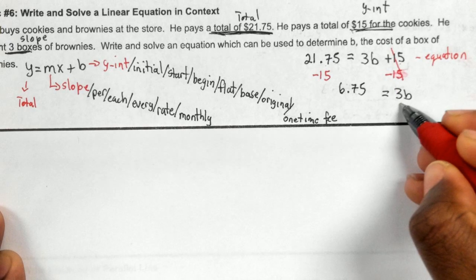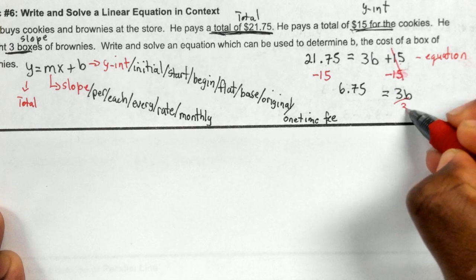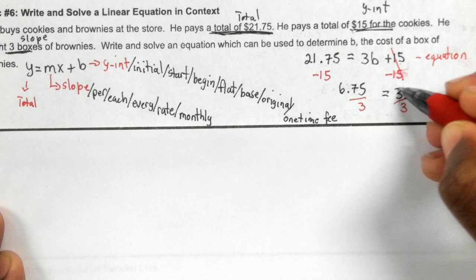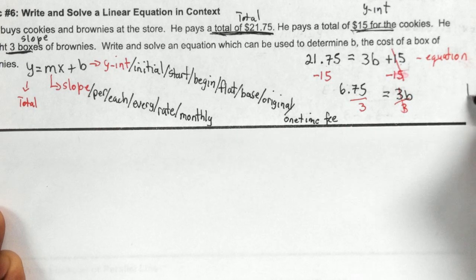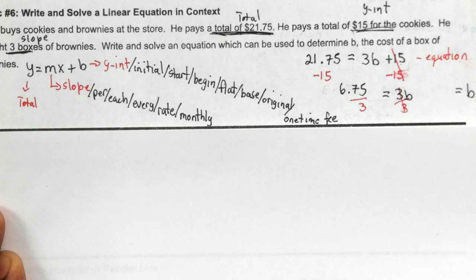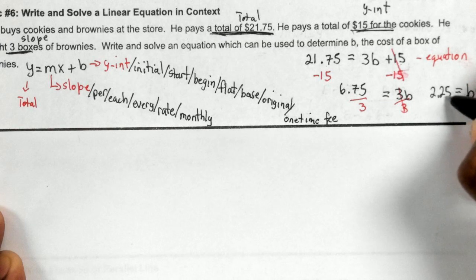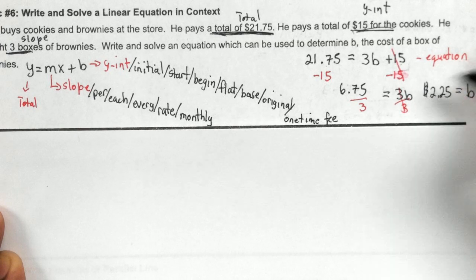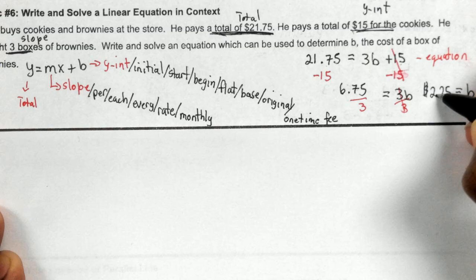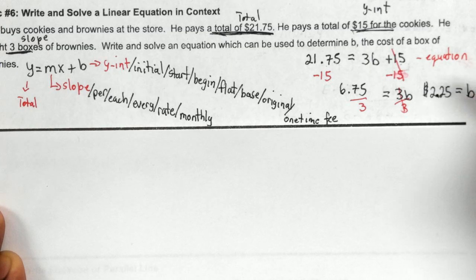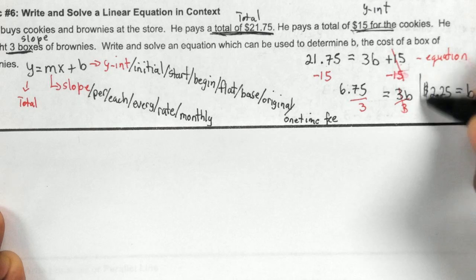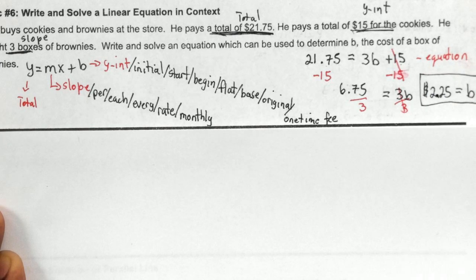Now I'm going to break up the multiply by dividing. So your brownies, or b, is equal to 6.75 divided by 3, which is 2.25. So the amount cost $2.25 for each individual brownie that's in the box.